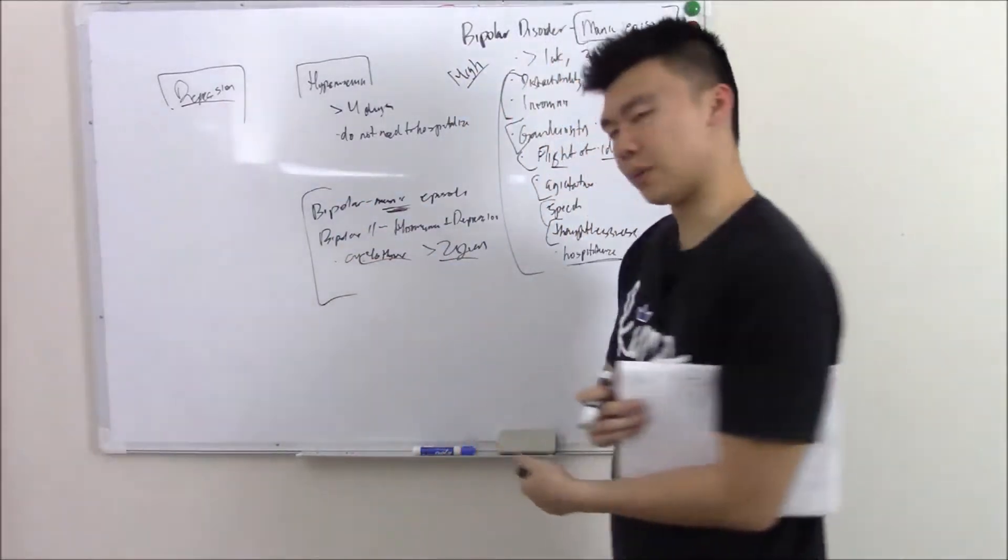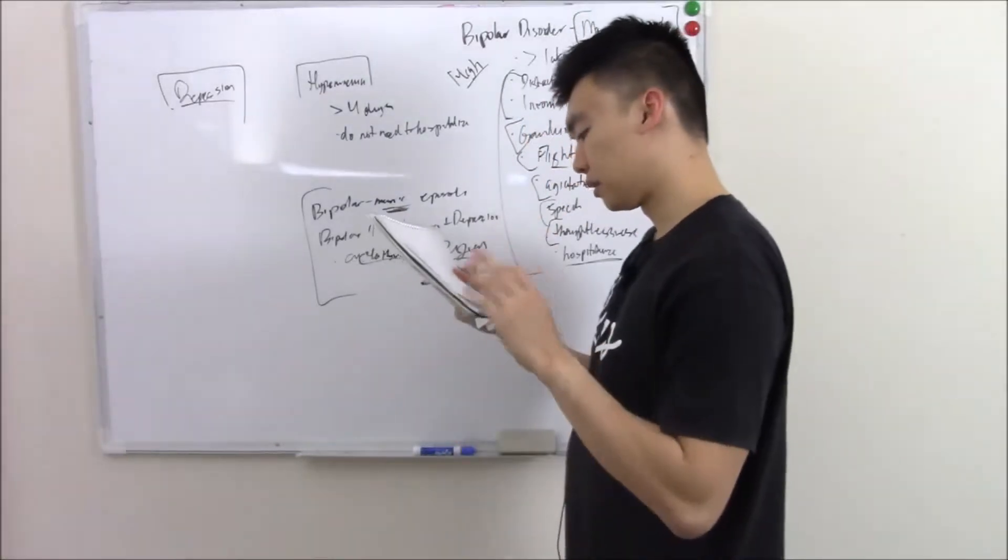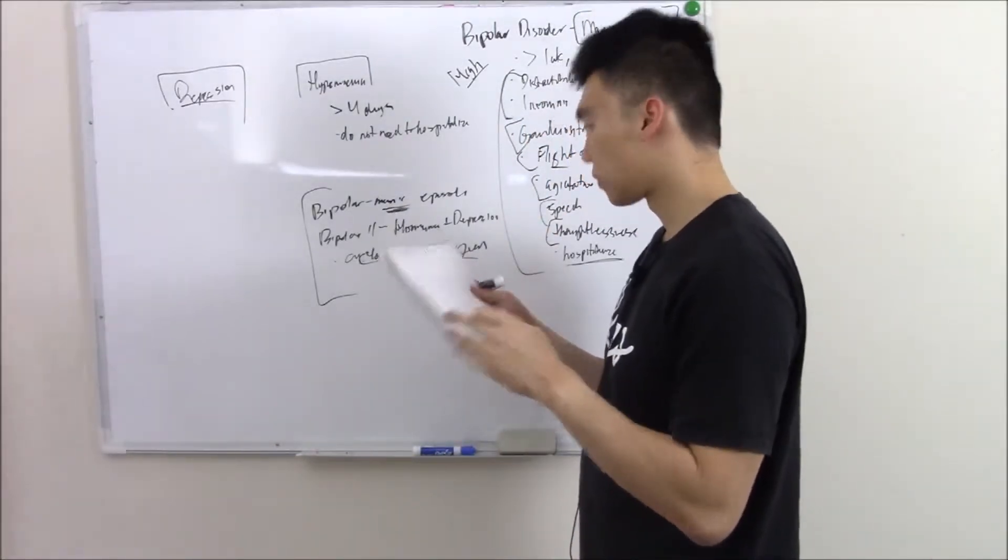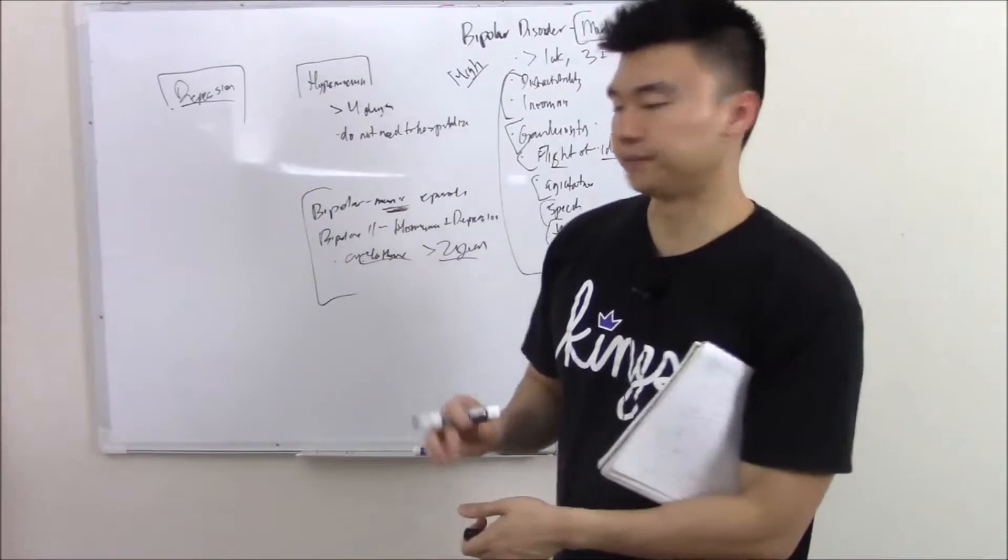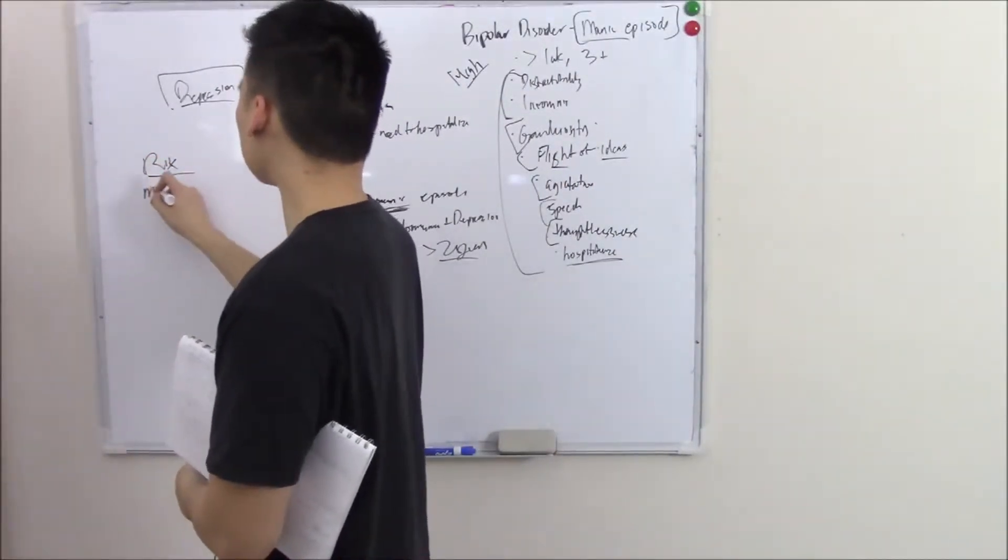That is bipolar 1. Bipolar 2. Cyclothymic. How are you going to treat them? Well, drugs include mood stabilizers.